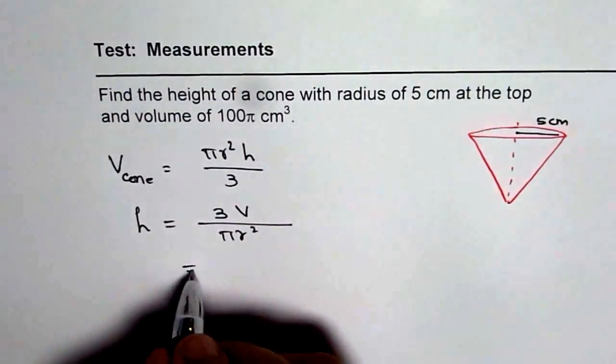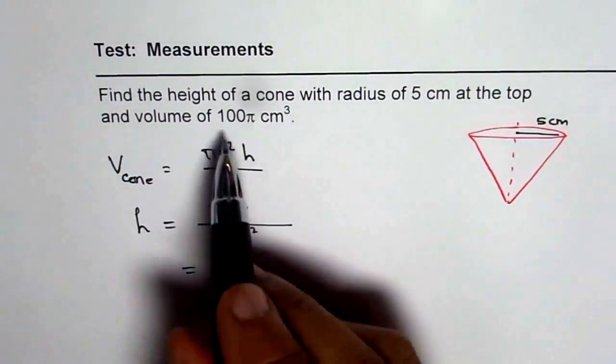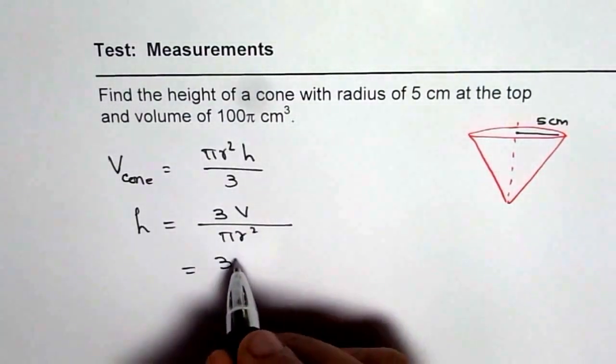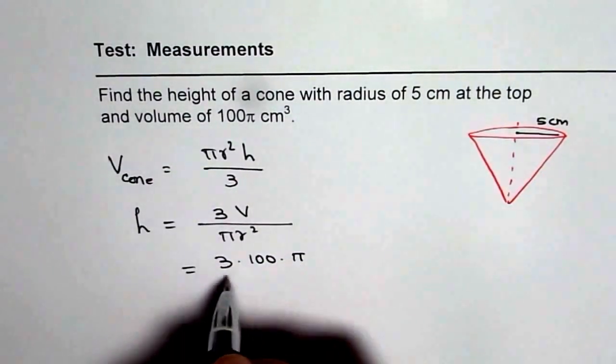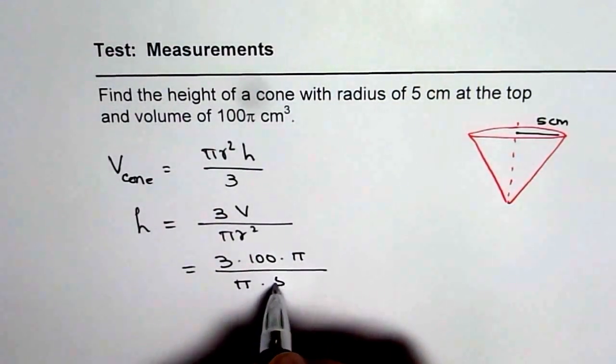So now we can substitute the values. For volume we are given 100π. So we will write 3 times 100 times π divided by πr², which means 5².